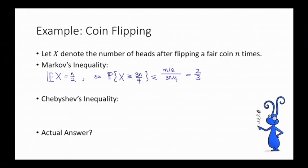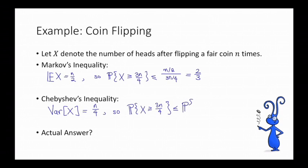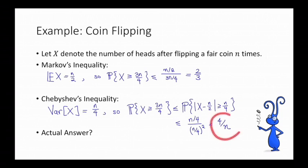Now let's try Chebyshev's inequality — we'll see that it does better here. To use Chebyshev's inequality, we need to calculate the variance of x. You can check that the variance of x is equal to n/4 — it's a good idea to pause and verify this. So Chebyshev's inequality says the probability that x is bigger than 3n/4 is less than or equal to the probability that |x − n/2| is greater than or equal to n/4, which is at most the variance n/4 divided by (n/4)², simplifying to 4/n. This goes to 0 as n goes to infinity, while 2/3 is always 2/3.